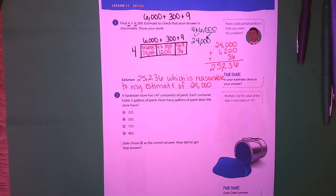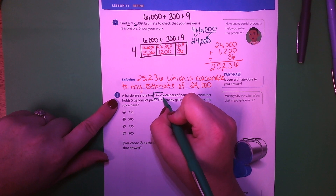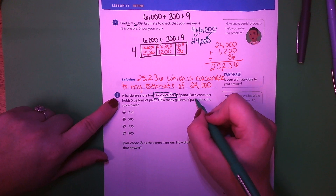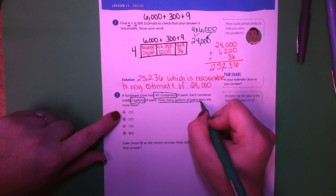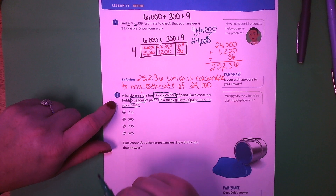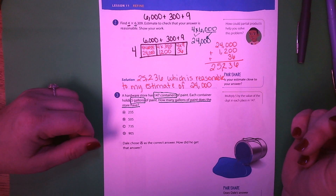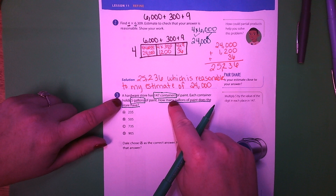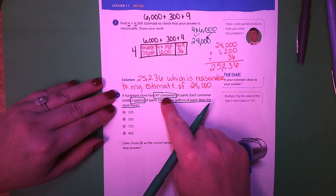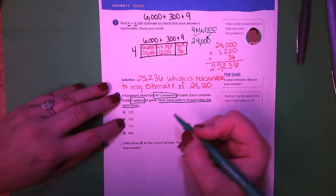Let's look at number three. A hardware store has 147 containers of paint; each container holds 5 gallons of paint. How many gallons of paint does the store have? So we have 147 containers and there are 5 gallons in each, so I'm going to use partial products.